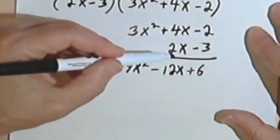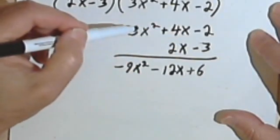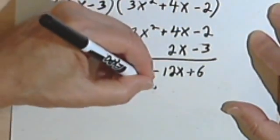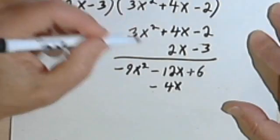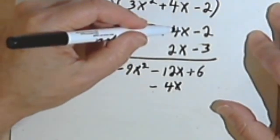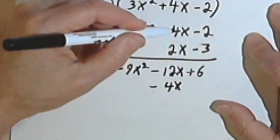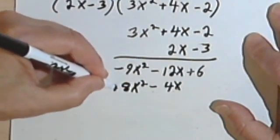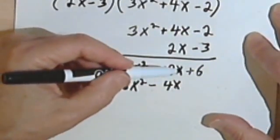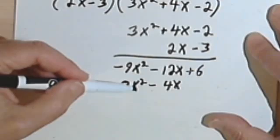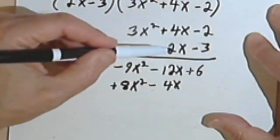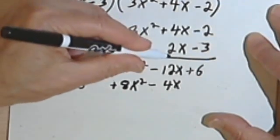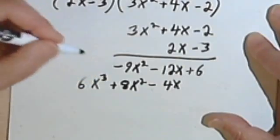Now I'm going to multiply the 2x times each of the terms in the trinomial. So 2x times negative 2 is negative 4x. 2x times 4x is 8x squared. You'll notice what I'm doing is lining up my terms. Over here I've got x's over x's, x squared over x squared. So to go on, 2x times 3x squared will give me 2 times 3 is 6, and x times x squared will be x to the third.